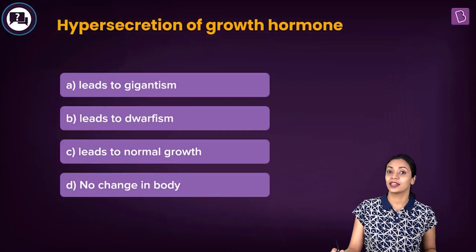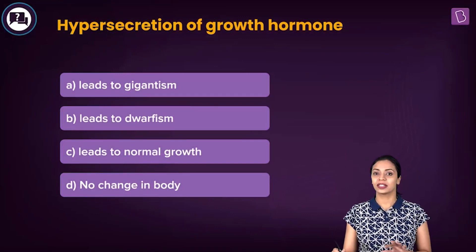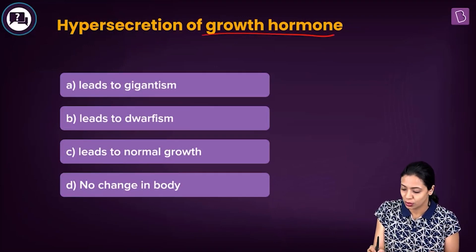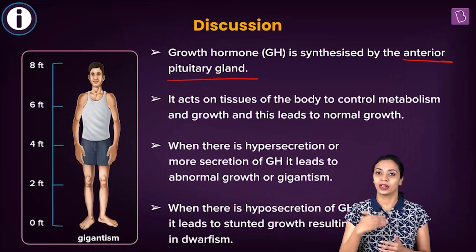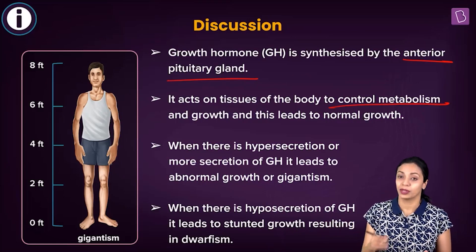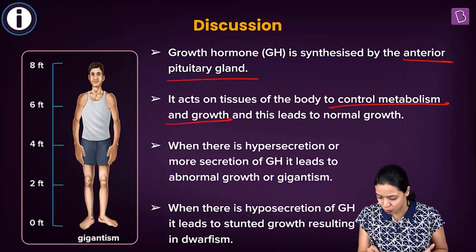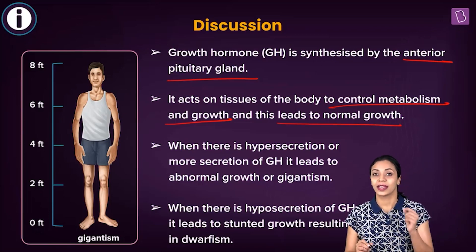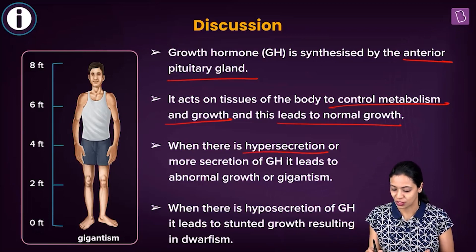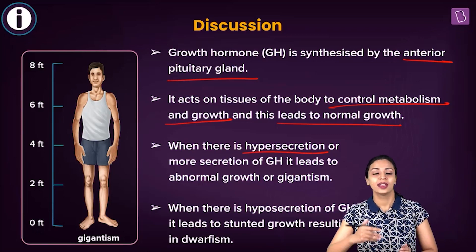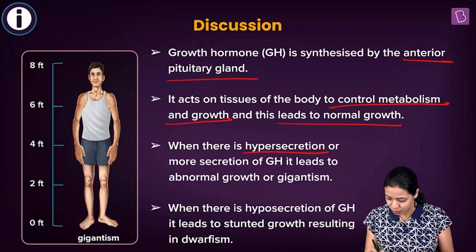Here's the question: Hypersecretion of growth hormone leads to — options are: gigantism; dwarfism; normal growth; no change in the body. Growth hormone, also known as somatotropin, is produced by the anterior lobe of the pituitary. Its functions include controlling metabolism and growth of the body. When released in normal quantities it leads to normal growth, but when there is excess secretion — hypersecretion — it results in abnormal growth leading to gigantism.